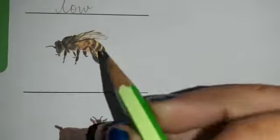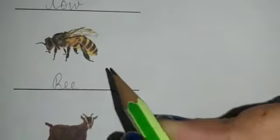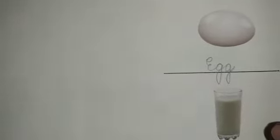Next, this is a bee. So, B-E-E. And this is an egg. E-G-G, egg.